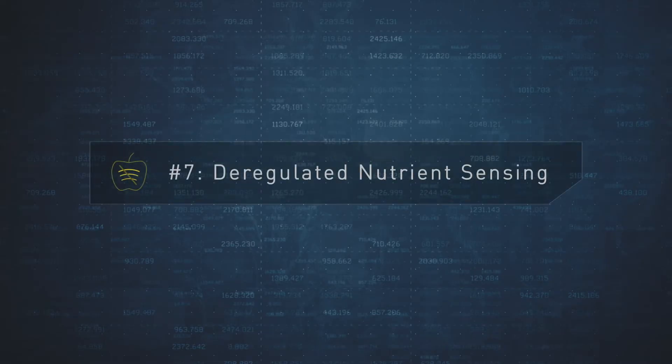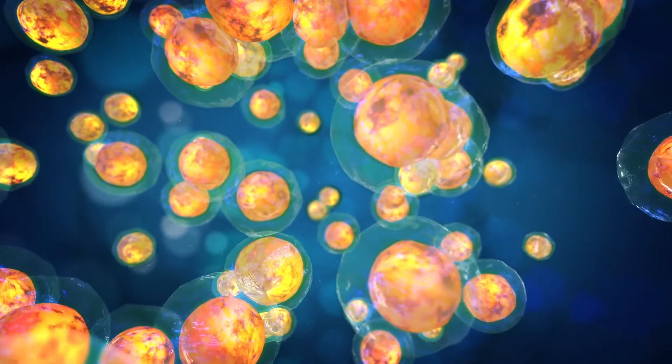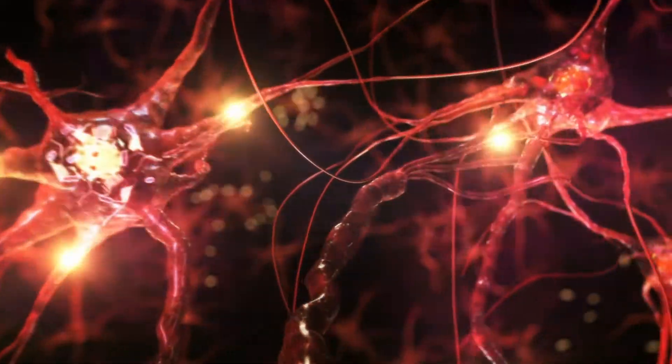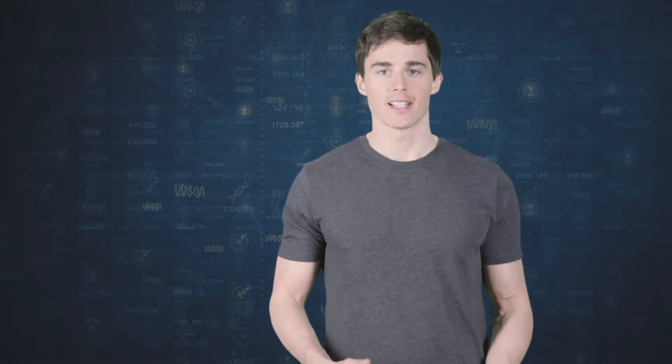The seventh hallmark of aging is deregulated nutrient sensing. Cellular activities are all the natural functions that occur in the cell, such as transporting nutrients, replication, and transmission of nerve impulses. All of this activity needs fuel. If cells sense that fuel is abundant, cellular activity and metabolism speed up. Over time, the pathways that signal nutrient levels deteriorate.